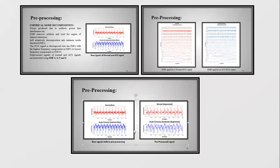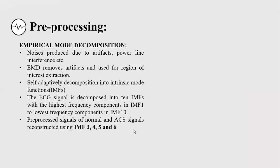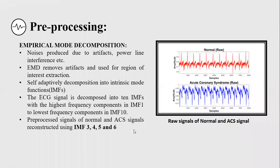Now let's move towards pre-processing. Acquired dataset contains motion artifacts, hence it needs to be pre-processed. Empirical mode decomposition technique is used for this purpose. It is used for removing artifacts and for the region of interest extraction. EMD decomposes the signal into its IMFs. ECG signal is decomposed into 10 IMFs, with highest frequency components in IMF1 to the lowest frequency components in IMF10.